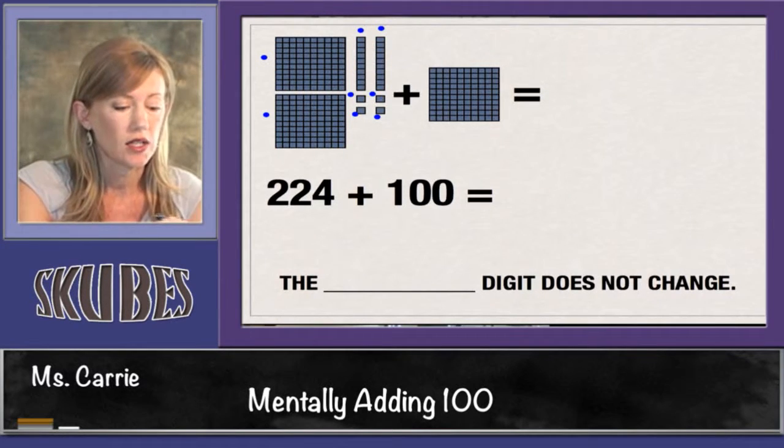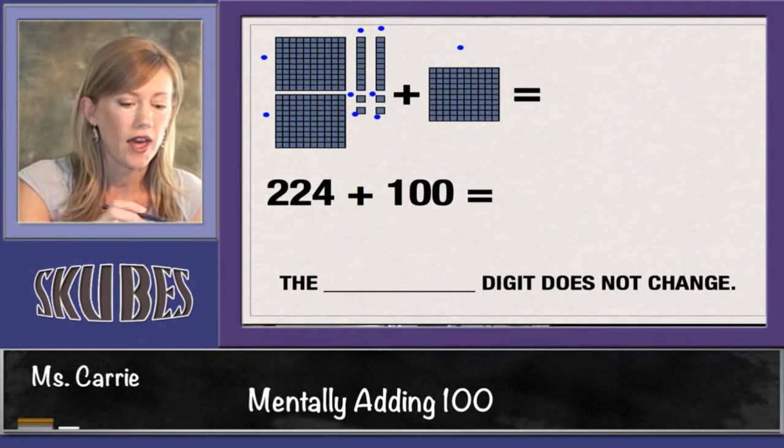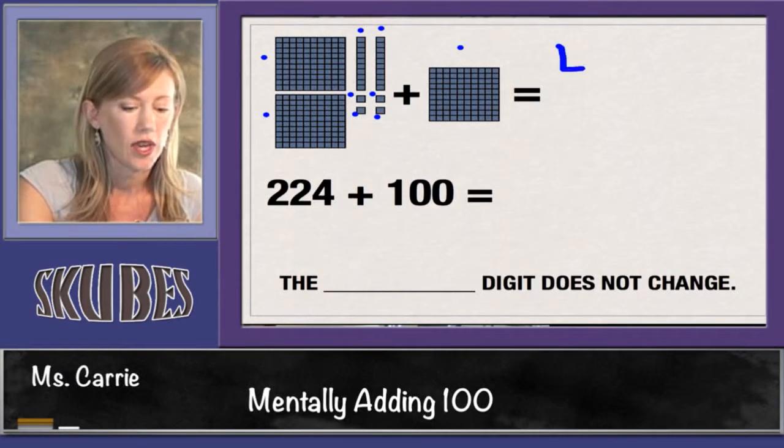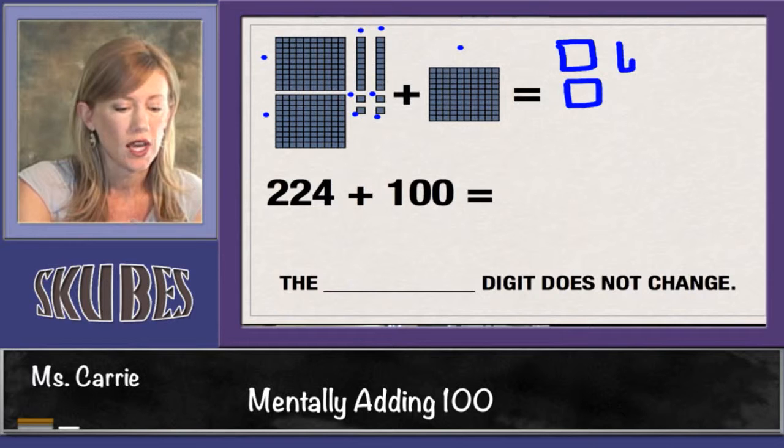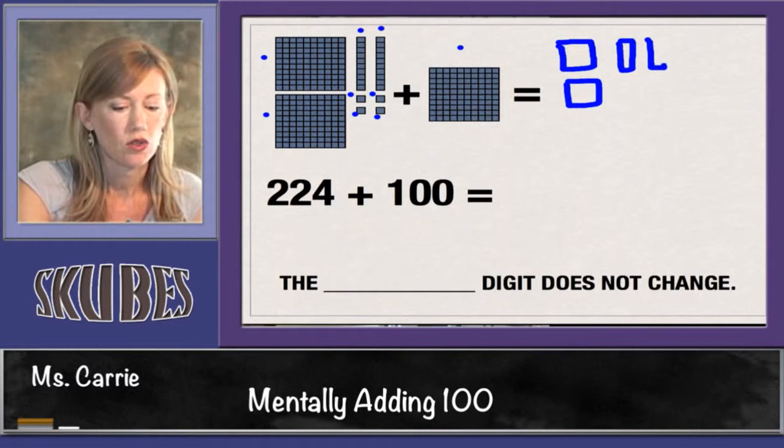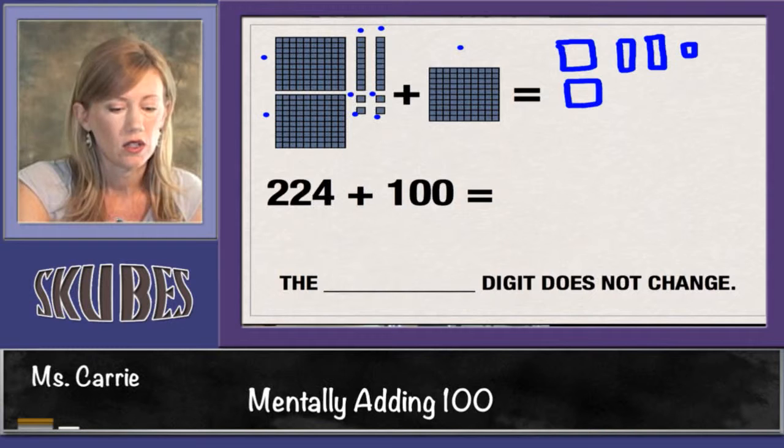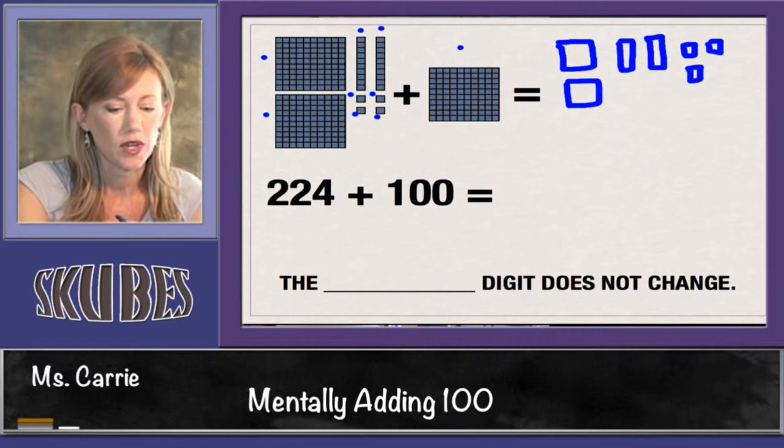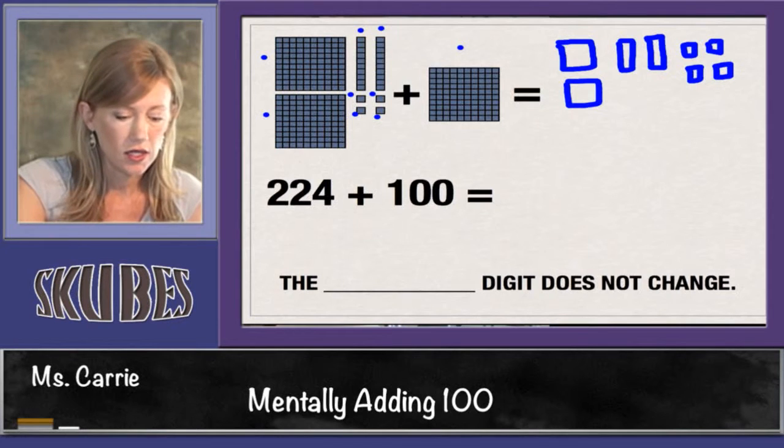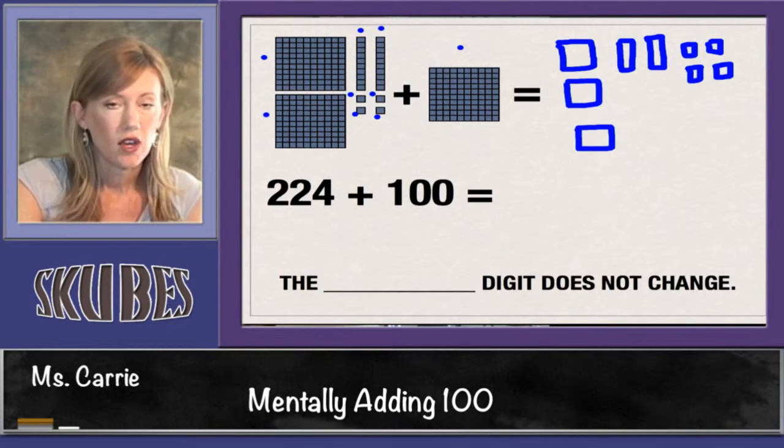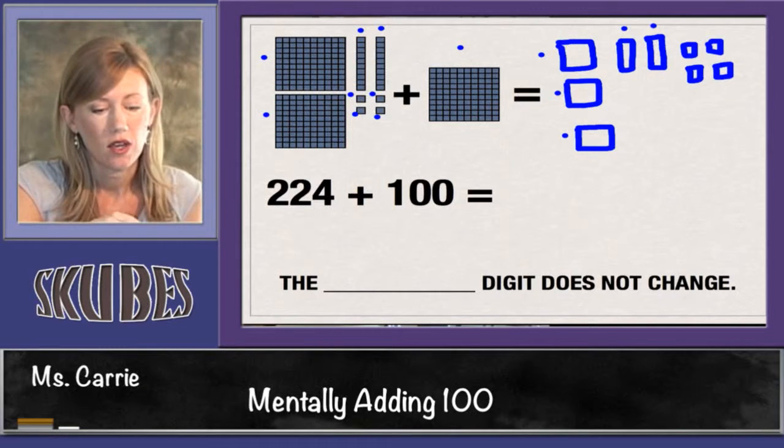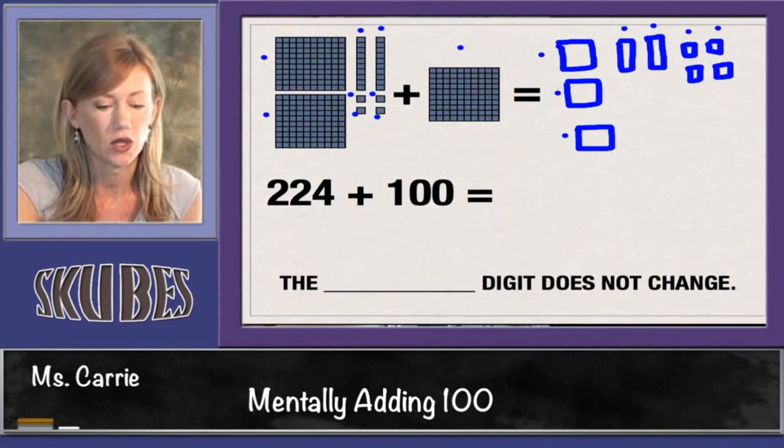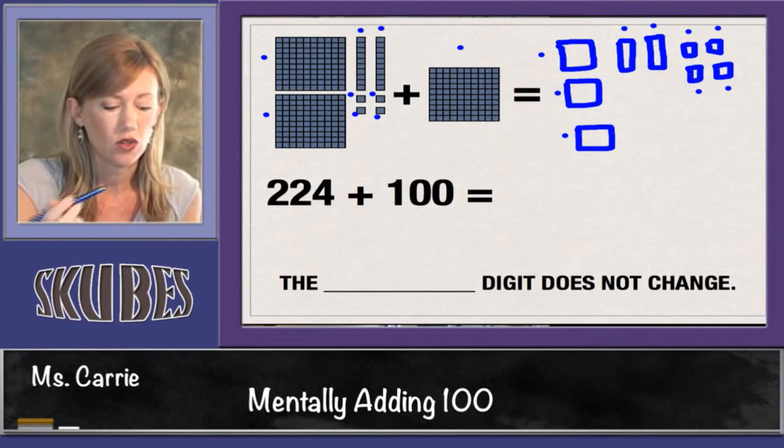Next to it says plus 100. So let's go ahead and draw that out and add it up on the other side. We add 100, 200, 210, 220, 221, 222, 223, 224 plus 100. If we add that up, we get 100, 200, 300, 310, 320, 321, 322, 323, 324.